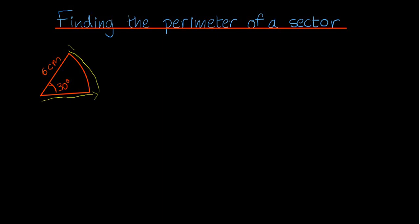...and back to there. So in order to find the perimeter of this sector, we would need to find the arc length and then add back the two radii on either side of the sector.